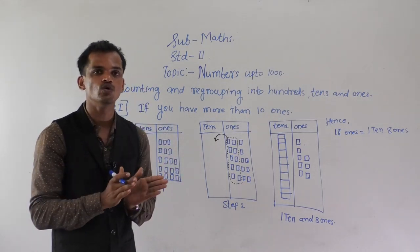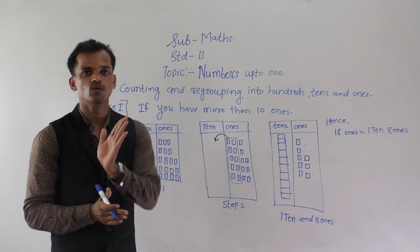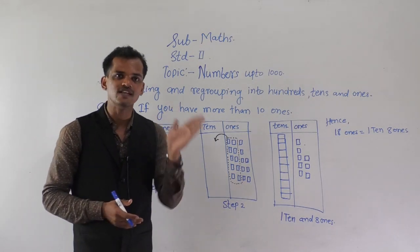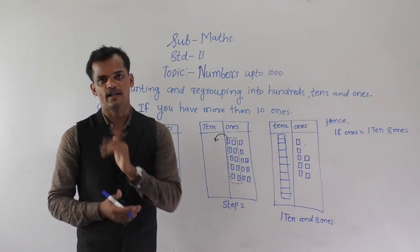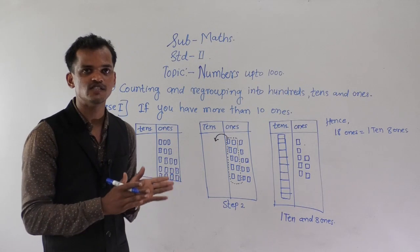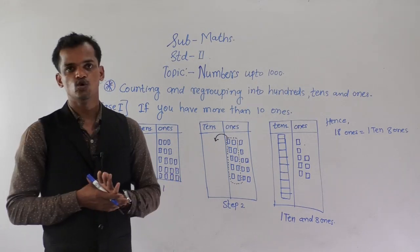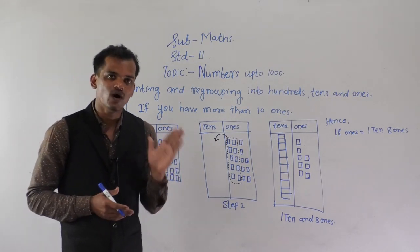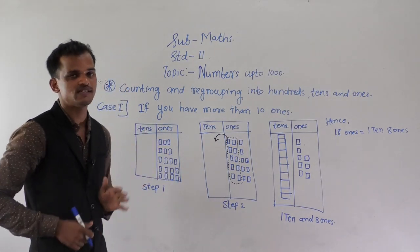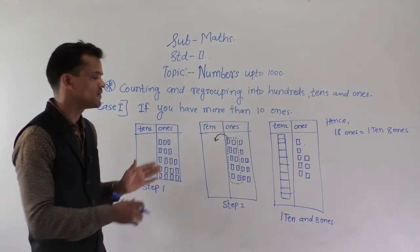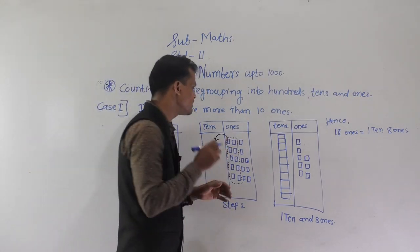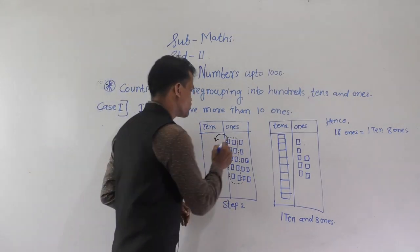And we have to regroup that into 1s and 10s. Those 18 ones we have to regroup into 1s and 10s. So the second step is to count the 10 bricks.